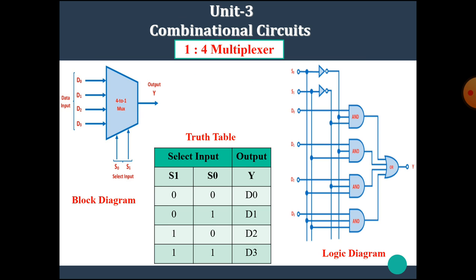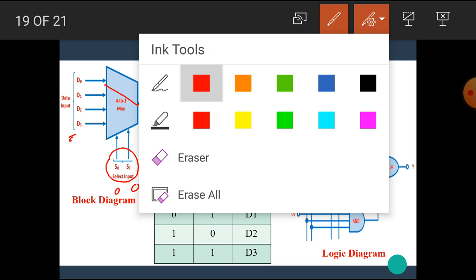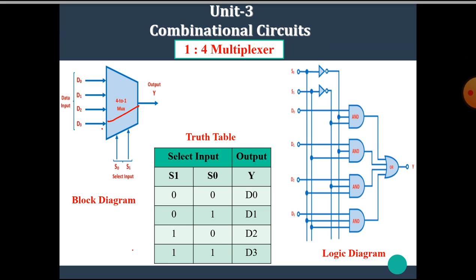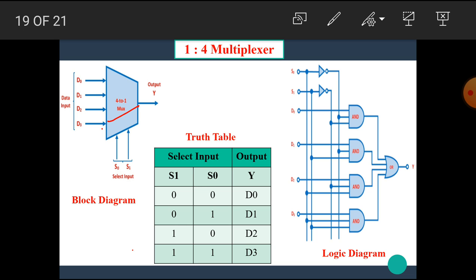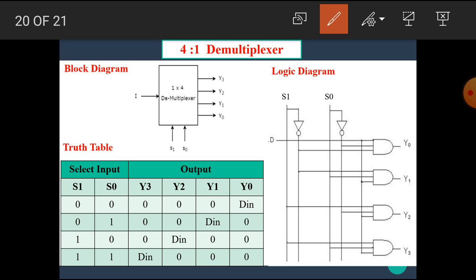Let's review once again. For a 4-to-1 multiplexer, it has four inputs and one output. The inputs are selected by the combination of S1 and S0: when S1 and S0 is 0-0, D0 is selected; when the combination is 0-1, D1 is selected; for the next combination, D2 is selected; and for the next, D3 is selected. According to the truth table, the logic equations are derived, and from those equations the logic diagram is drawn.